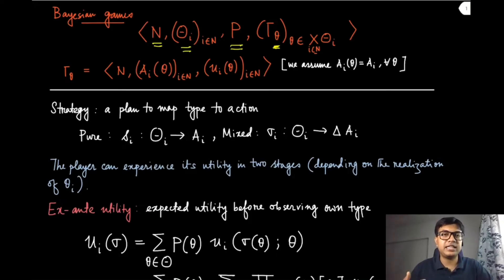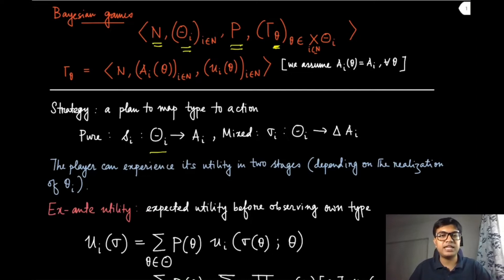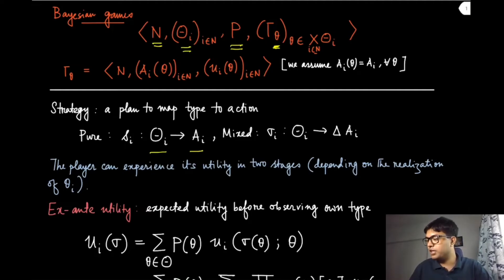The Bayesian game chooses different kinds of normal form games given the type profile. The strategy — both pure and mixed — has a very similar structure to the normal form game, just with the difference that it is now a mapping from the type set to the set of actions for pure strategies. If player i has a specific type, then the strategy corresponding to that type is a specific action in that set. This is the pure strategy in the Bayesian game setting, written as s_i of theta_i.